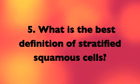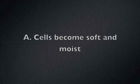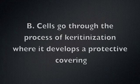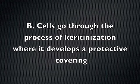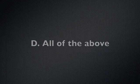Question 5. What is the best definition of stratified squamous cells? A. Cells become soft and moist. B. Cells grow through the process of keratinization, where it develops a protective covering. C. The cells become rounded as they age. Or D. All of the above.